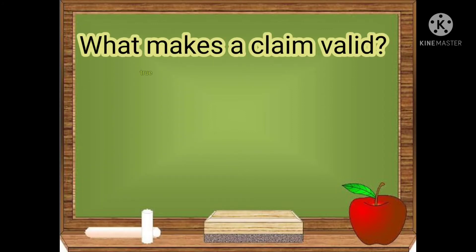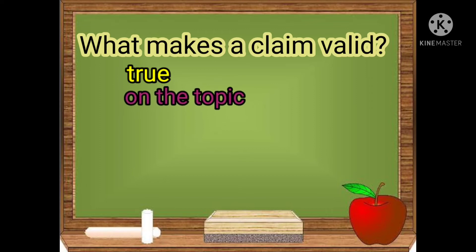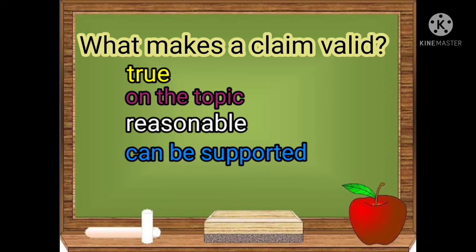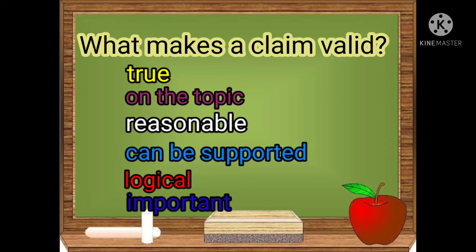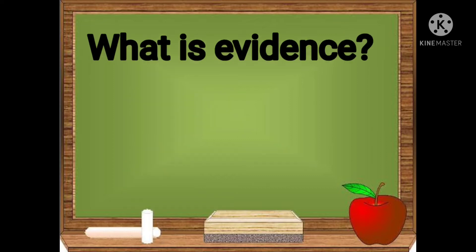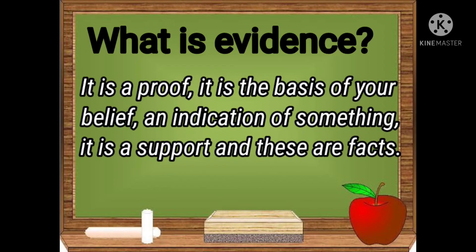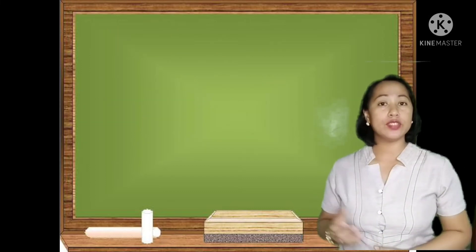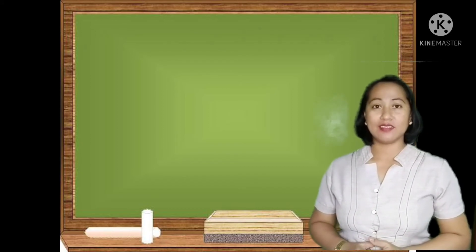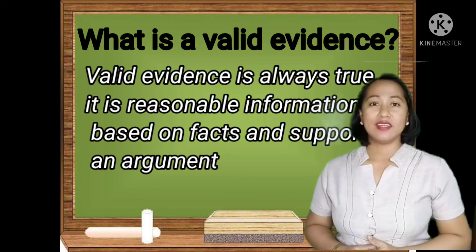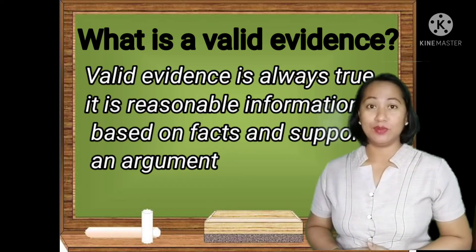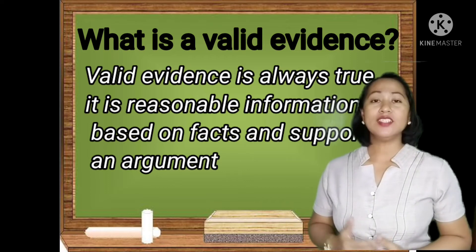What makes a claim valid? A valid claim is true, it's on the topic, it is reasonable, it can be supported, it is logical, and it's important. Regarding evidence — great evidence is a proof; it is the basis of your belief, an indication of something, a support, and these are facts. Valid evidence is always true — it is reasonable information based on facts and it supports an argument.